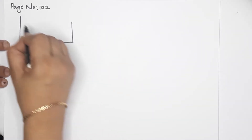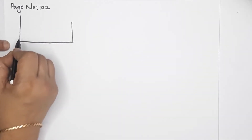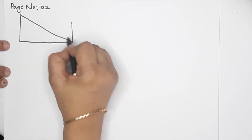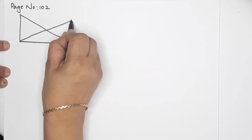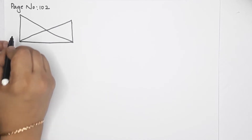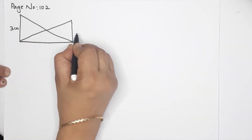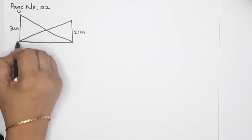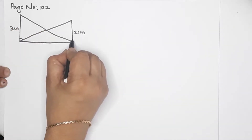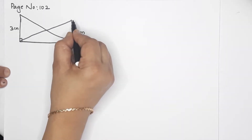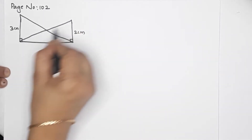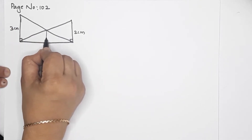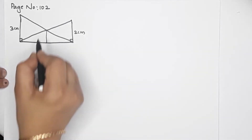In the figure, the poles are connected by ropes. This is a right triangle — it is 90 degrees. Here the pole height is 3 centimeters and the other is 2 centimeters. Both are 90 degrees. This is the stretch here. This is the height — what is the height?